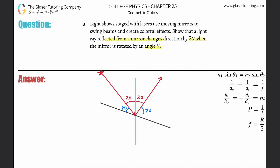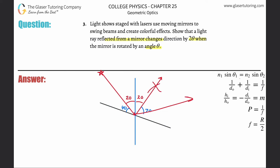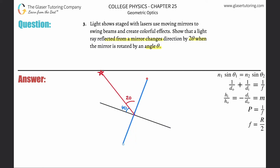The normal is also going to rotate because the normal is always a 90-degree perpendicular line relative to the mirror. The light source is still hitting the mirror, but the reflected ray is going to be somewhere out here — it's no longer in its original position. So we're going to erase that side, and rotate the normal so that it's 90 degrees to the new mirror position.